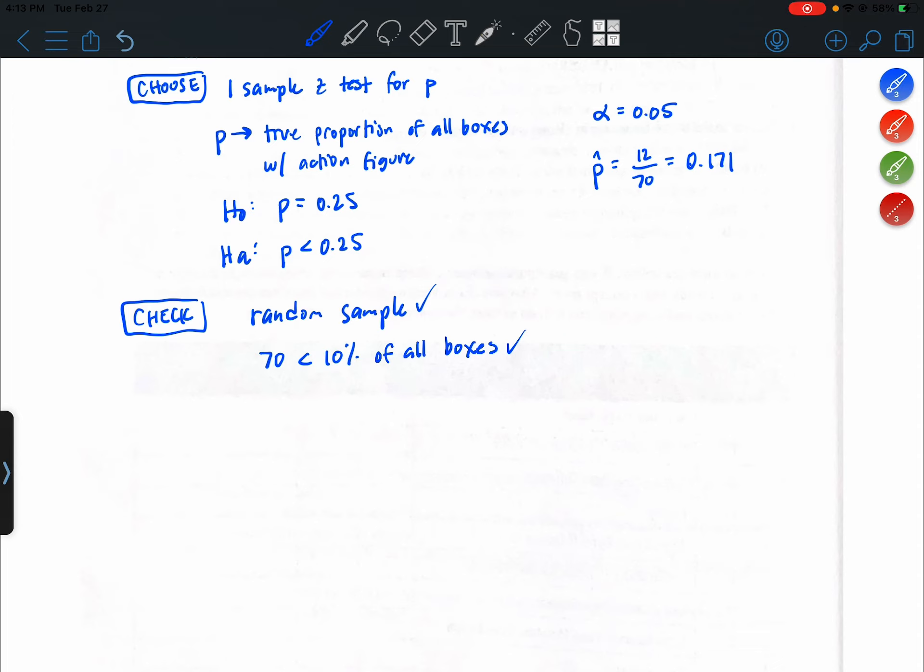Finally, the large counts condition. So n times p would be 70 times 0.25. And n times 1 minus p is 70 times 0.75. So hopefully both of those products come out to at least 10. Okay, so 17.5 for that one and 52.5 for that. So we meet the large counts rule.